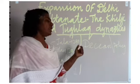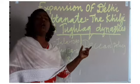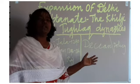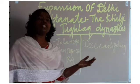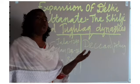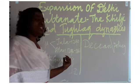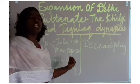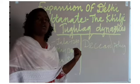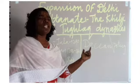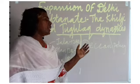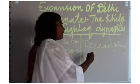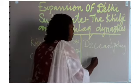Another group who were against the rule of Alauddin Khalji was the nobles. To control them, he always kept a check. The nobles were not allowed to attend any parties or drink alcohol.